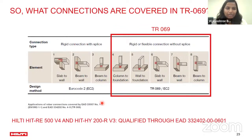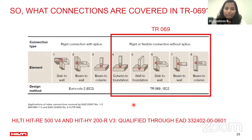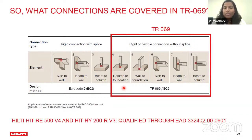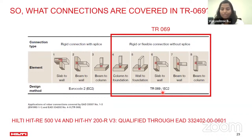With TR069's design principles and inclusion of anchor theory alongside rebar theory, the range of applications is significantly expanded. Previously with Eurocode 2, we could design slab-to-slab, slab-to-wall, beam-to-wall, and beam-to-column applications. With the inclusion of TR069, which is also based on EC2, we can now design column-to-foundation, wall-to-foundation, slab-to-wall, beam-to-wall, and beam-to-column connections where moment is also acting on these structural elements. Simply put, we now have a solution for moment-resistant or rigid connections based on TR069.